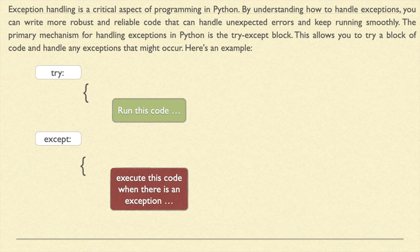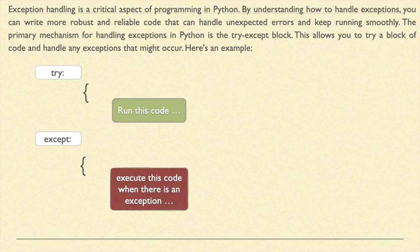This allows us to write a block of code and handle any exceptions that might occur. As you can see, within the try block we write important logic that can cause an error or exception, and in the except block we handle that error or exception. For example, if you are dividing a number — say 5 divided by 0 — it will result in a ZeroDivisionError, and this error should be caught in the except block so it won't disturb the normal flow of program execution.